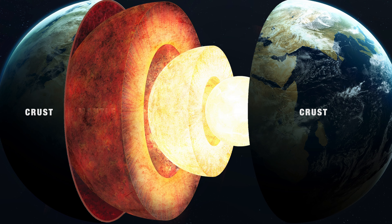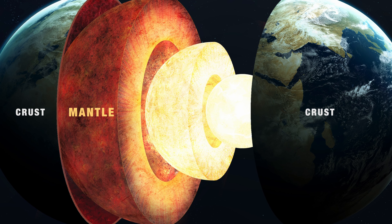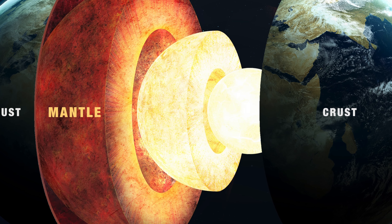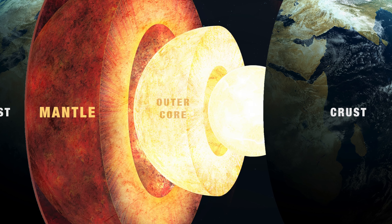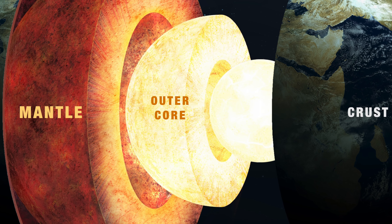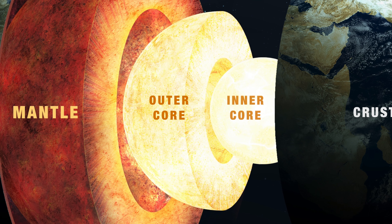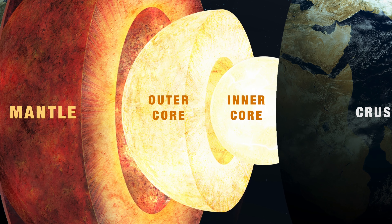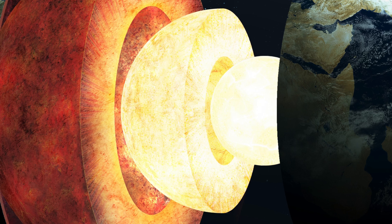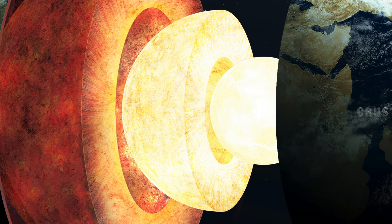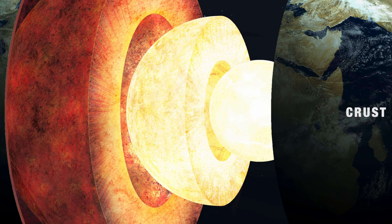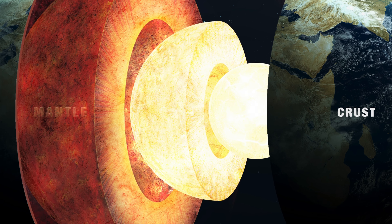Under the continents, the crust is thicker — up to 40 miles. Just below the crust is the mantle, which is almost 1,800 miles thick. Then come the outer core and inner core. Below the Earth's crust, high temperatures result in the formation of an energy called geothermal energy.